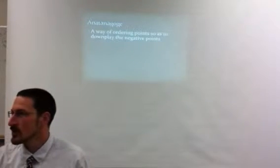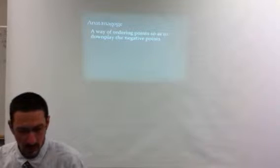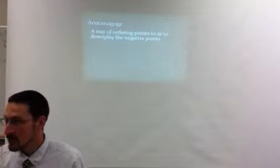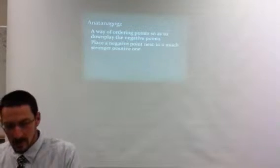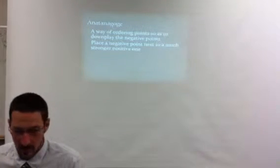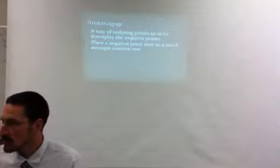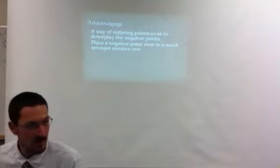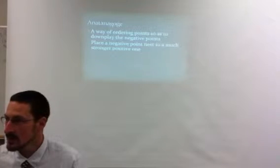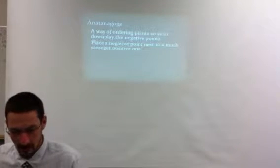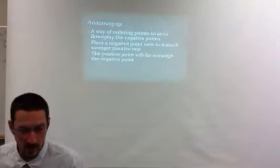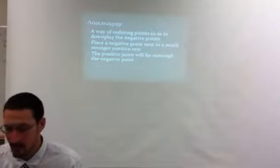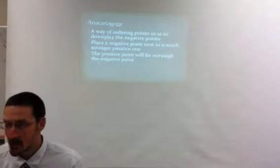Antanagogy is a way of ordering points so as to downplay the negative points. The way you do that is you place a negative point next to a much stronger positive one. This helps to emphasize the positive one and de-emphasize the negative one. You want to make sure that the positive point will far outweigh the negative points. Far outweigh.